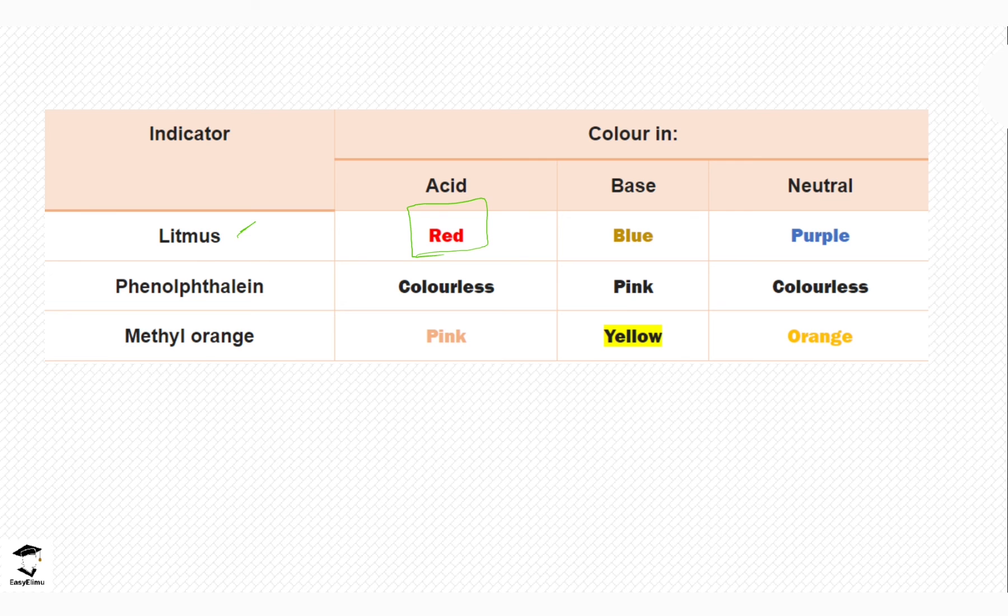If we take red and blue litmus papers and place them in a neutral solution, both the blue and the red turn purple, indicating that the solution is neutral. When you are explaining your observations regarding red and blue litmus paper, remember to mention both of them with the initial color and the final color.